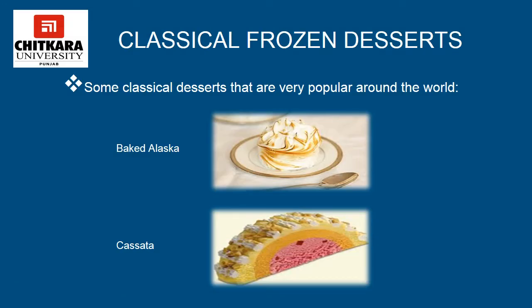Some classical frozen desserts popular around the world are Baked Alaska and Cassata. Baked Alaska, also known as Omelette Surprise, is a dessert consisting of ice cream and cake topped with browned meringue. Ice cream is placed in a pie dish lined with slices of sponge cake, topped with meringue, and placed in an extremely hot oven briefly — long enough to firm and caramelize the meringue but not long enough to melt the ice cream. Cassata is a traditional sweet consisting of round sponge cake moistened with fruit juices and liqueur, layered with ricotta cheese and candied fruit, with a shell of marzipan, pink and green colored icing, and decorative designs. Cassata also contains candied or dry fruits and nuts.